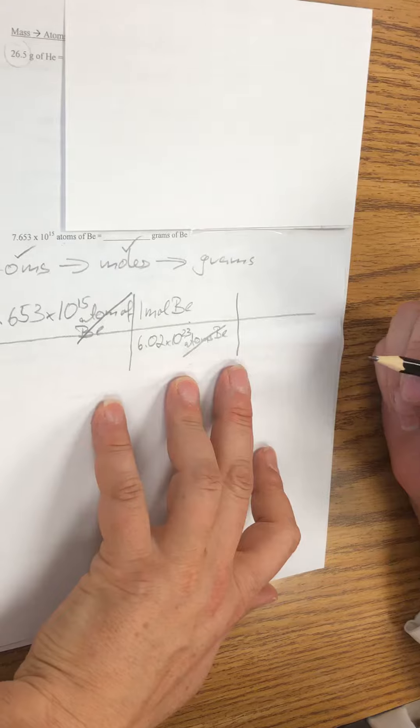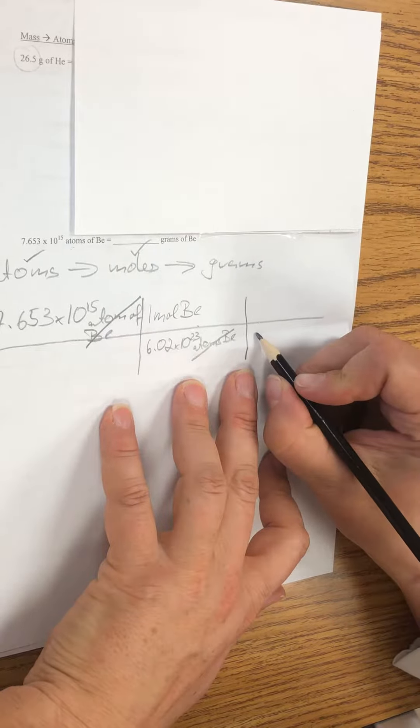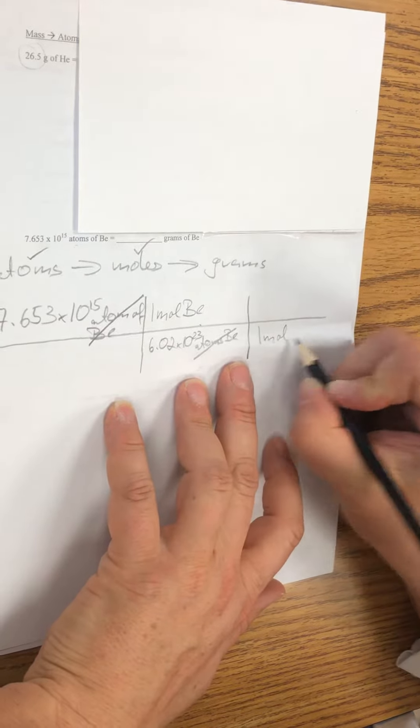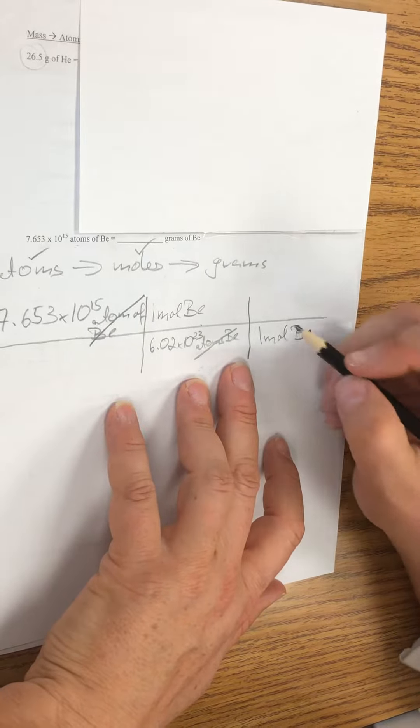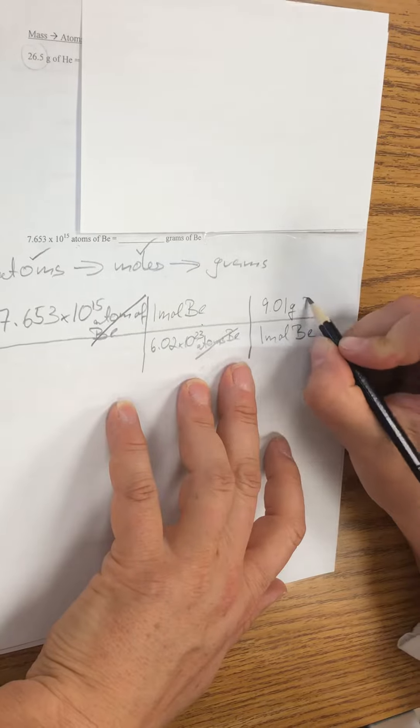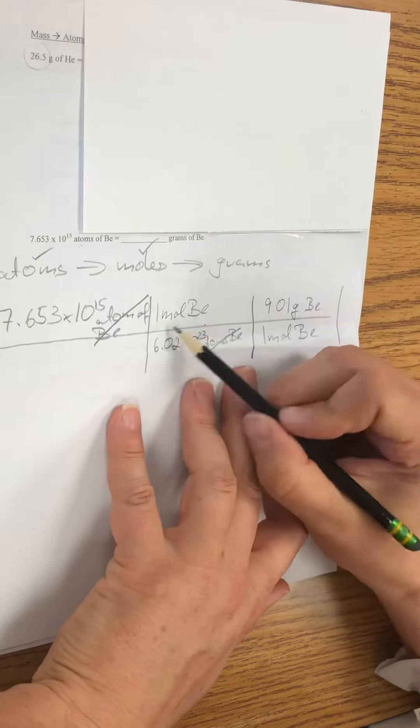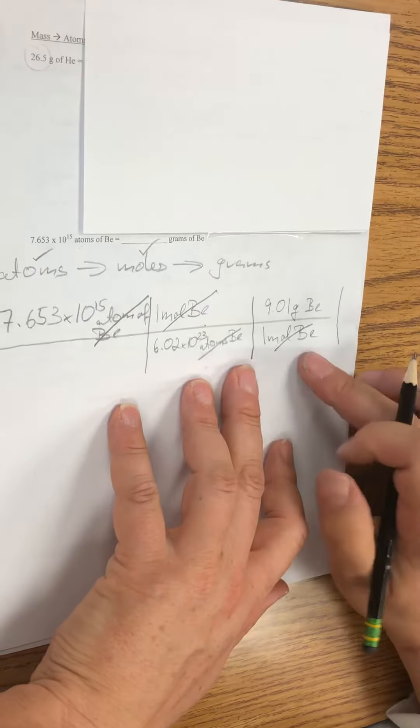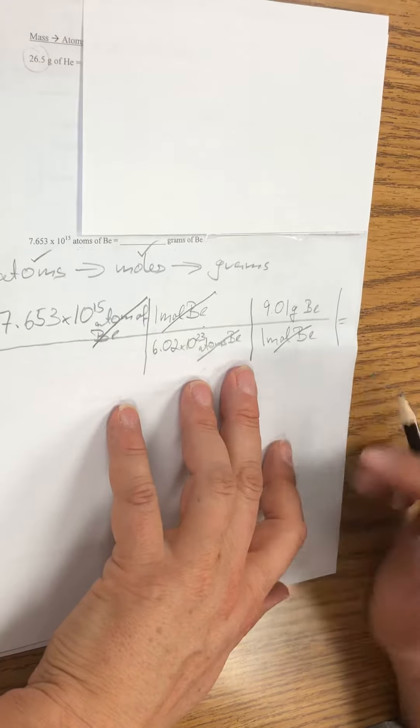From moles to grams, I will go to the periodic table and I know that one mole of beryllium weighs 9.01 grams of beryllium. Close this, divide out the moles, I'm left in grams, so my final answer will be in grams which will satisfy the need of this equation.